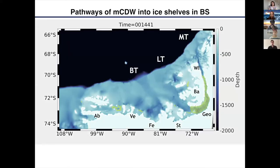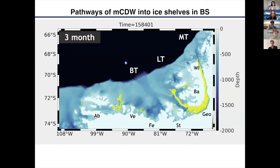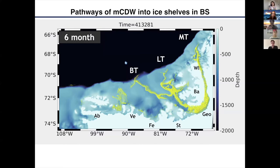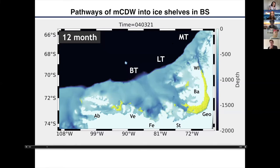We decided to understand what the pathways of circumpolar deep water are towards these actual cavities. We released particles under the ice shelf and tracked them for roughly one year. We find out that in any case, we don't see much year-to-year variation, so I'm showing the pathway calculated from the mean field. This is the mean structure of how circumpolar deep water flows towards the ice shelf cavity. There are bathymetric features that are important in determining these pathways, quite similar to the case in the Amundsen Sea.